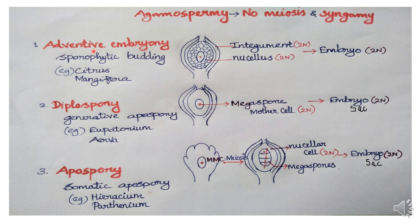Agamospermy is divided into three types: adventive embryo, diplospory, and apospory. First, adventive embryo — also called sporophytic budding. In the megasporangium of the ovule, embryo development occurs from the sporophytic body.